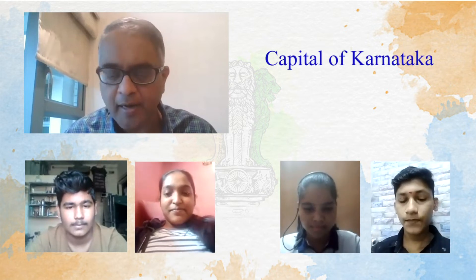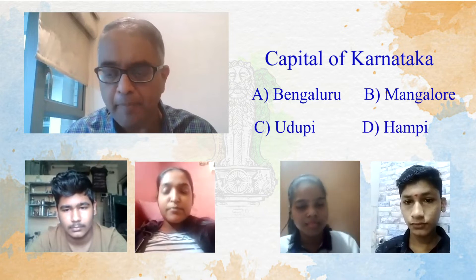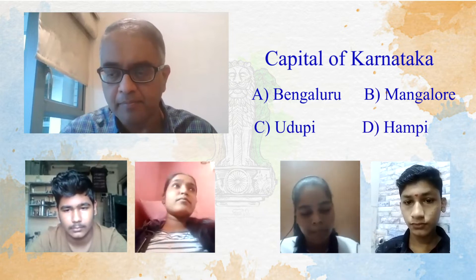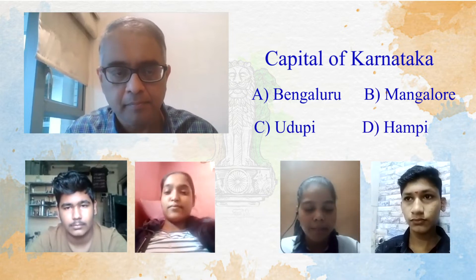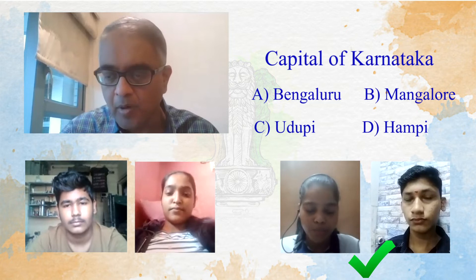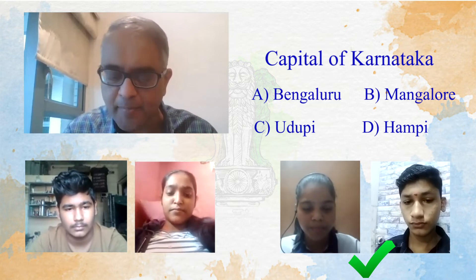Then we move on to the next team, which is Nishant and Sneha. Capital city of Karnataka — Bengaluru, Mangalore, Udupi or Hampi? The answer: Bengaluru. Okay, you're right there. So you get 10 points.